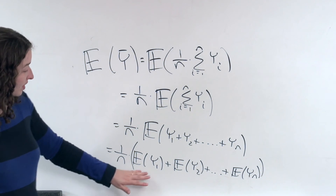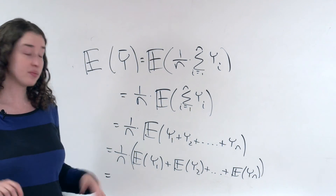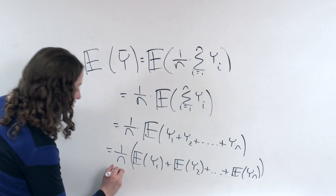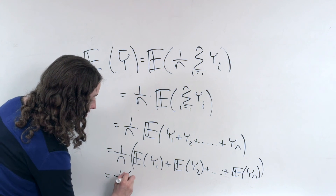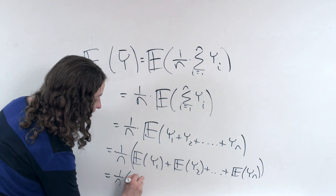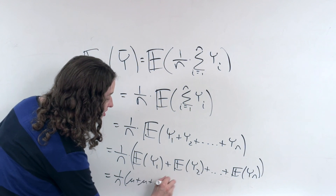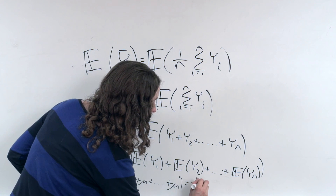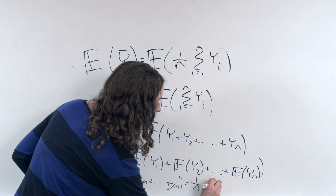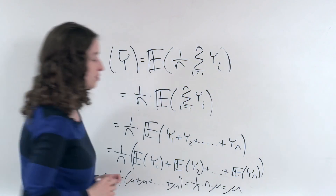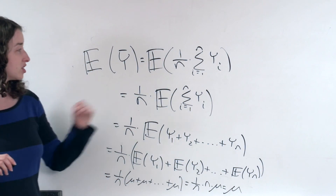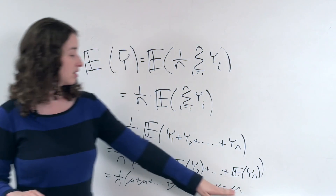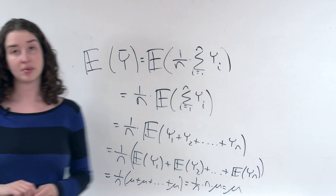And we know that the expected value of any particular data point is equal to mu. So what we have here is 1 over n times mu plus mu plus mu — n times — which is 1 over n times n times mu, which is equal to mu. So what we've demonstrated here is that the expected value of the sample mean is equal to the population mean.